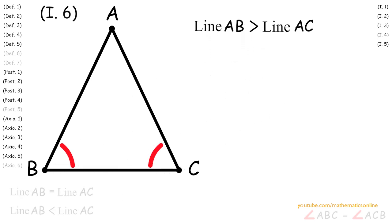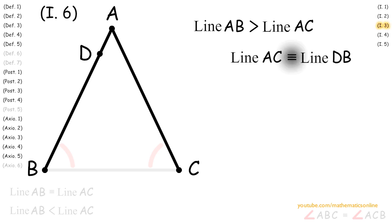First, let's assume line AB is greater than line AC. Since line AB and line AC are two unequal lines, we can use Proposition 3 to make the shorter line AC congruent to line DB. Next, we use Postulate 1 to create line DC.